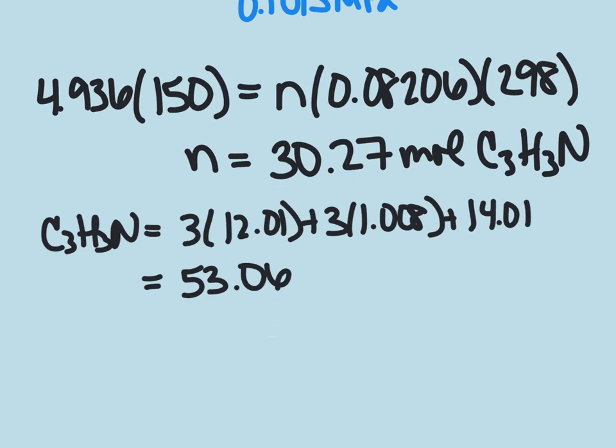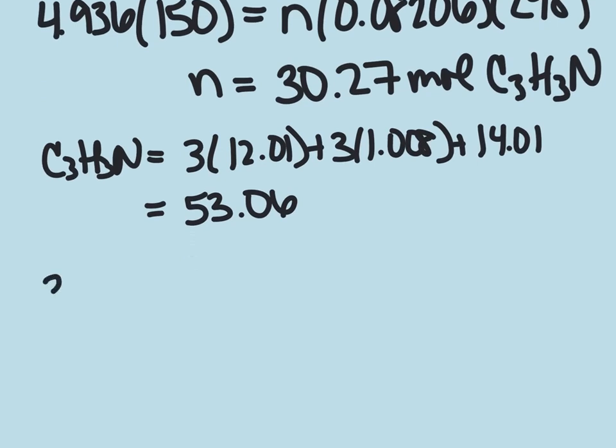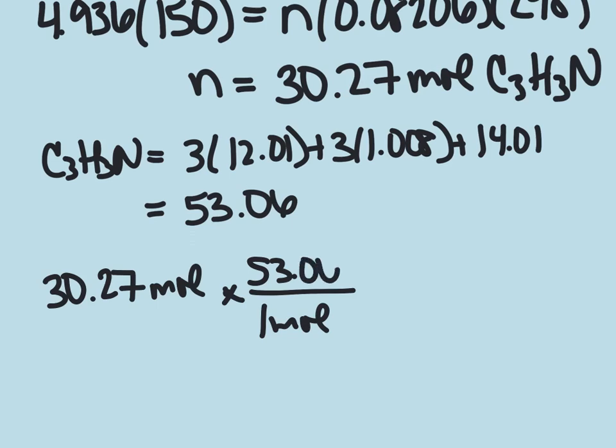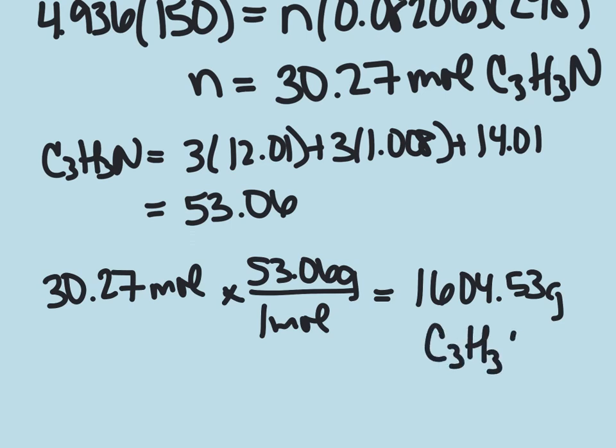So if we have 30.27 moles and we multiply that by 1 mole is going to be equal to 53.06 grams, then we will be able to produce 1,604.53 grams of C3H3N.